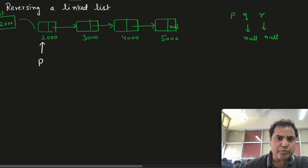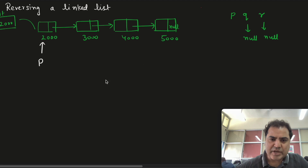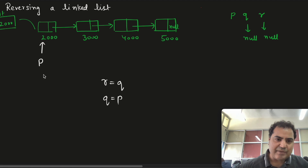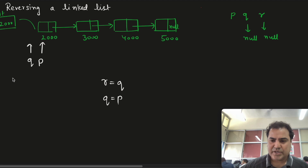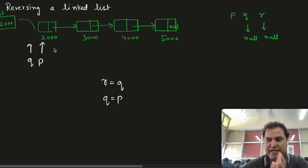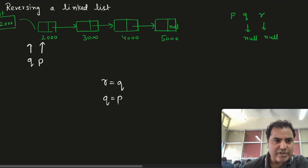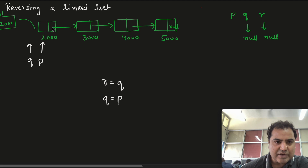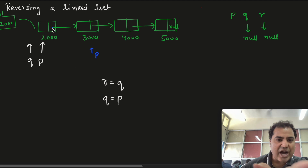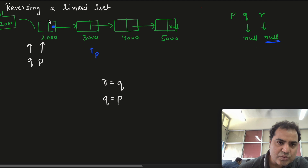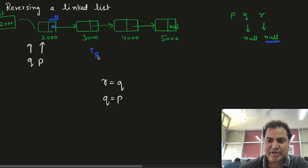I will take three pointers p, q, r. Step one: r = q. Step two: q = p, meaning q is also pointing to where p is pointing. Then I move p forward: p = p->link, so p moves to the next node at address 3000. Now q->link will be assigned r's address, which is null, so null is written in q's link field.